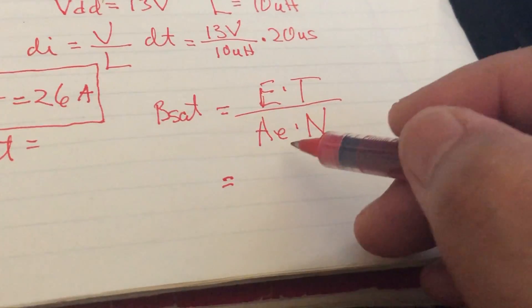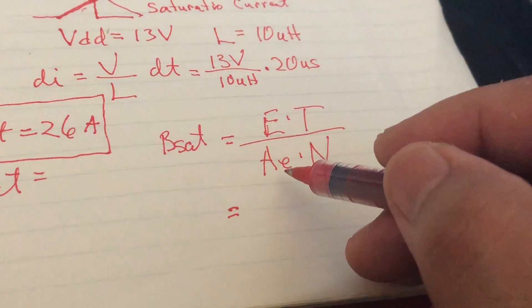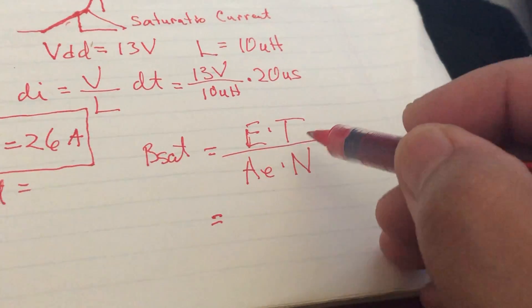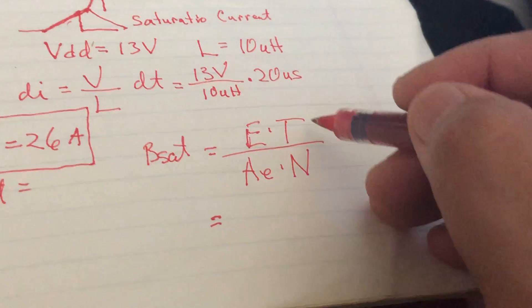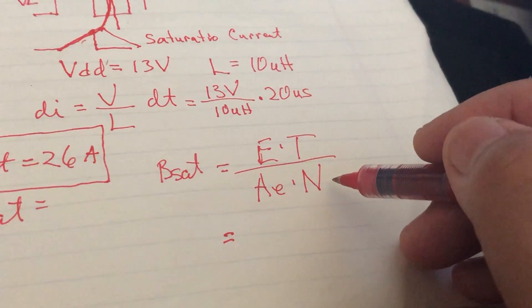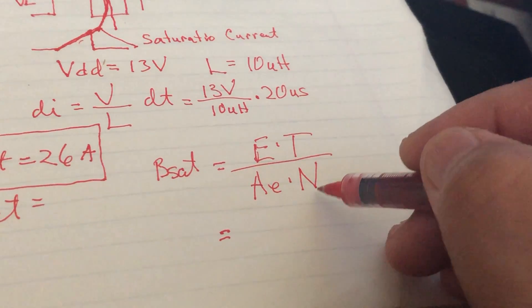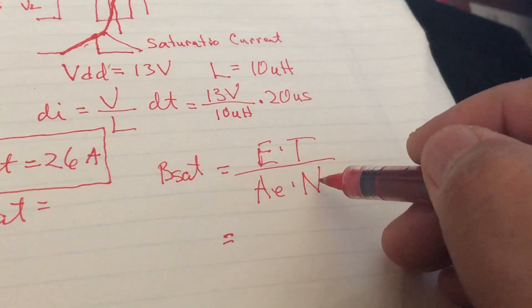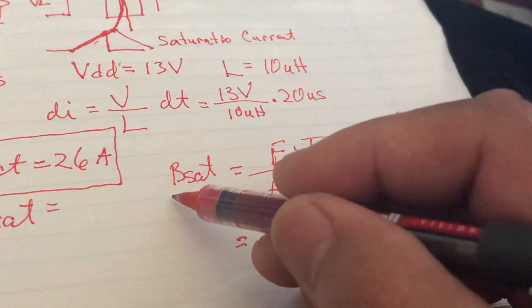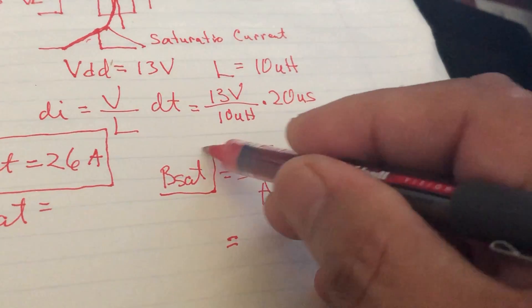I don't know what this AE is at this time, but if you plug in the time - we already know what the time is, 20 - and I believe the N, I don't have that information. But if you have the turns ratio and the area of the inductor, then you can calculate what Bsat is as well.